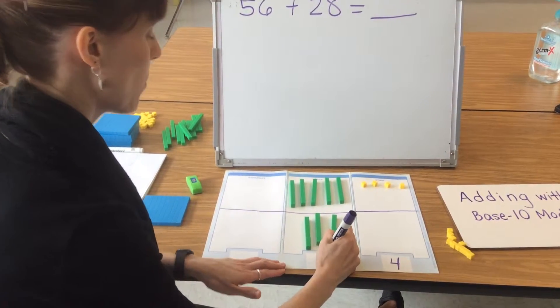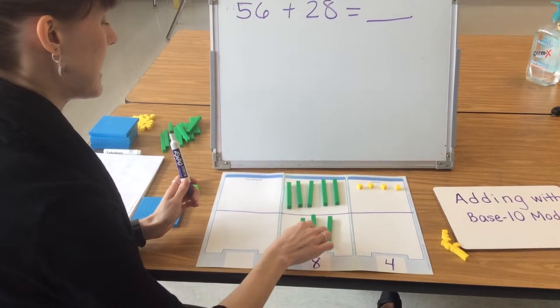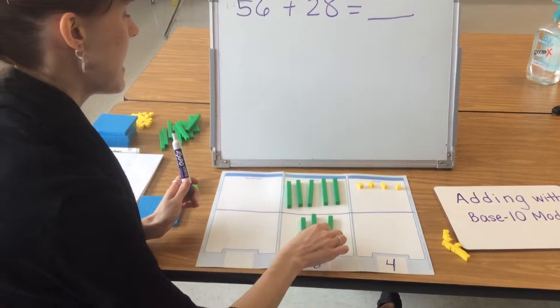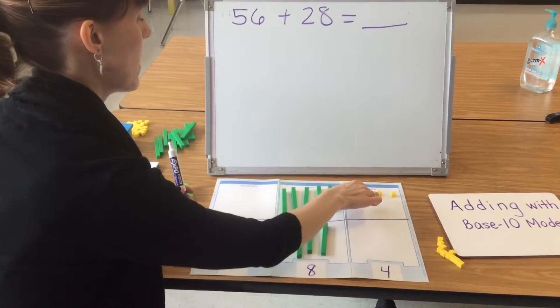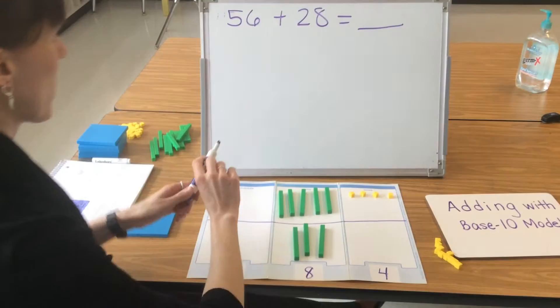So the total should be 84: 10, 20, 30, 40, 50, 60, 70, 80, 81, 82, 83, 84.